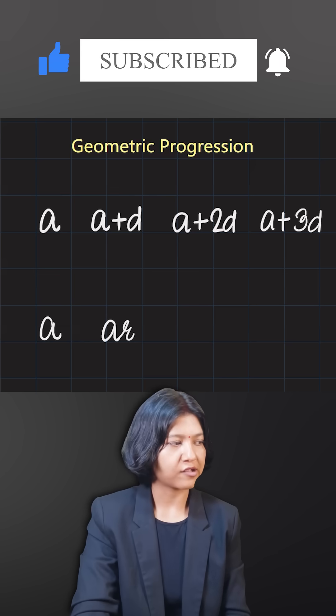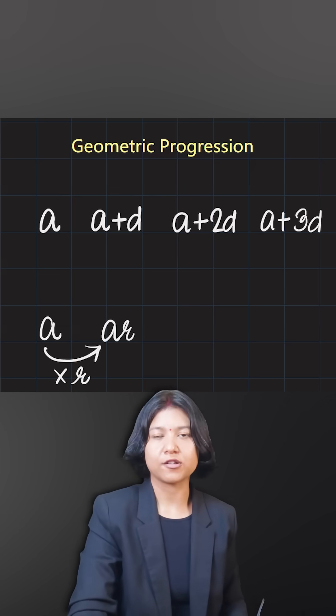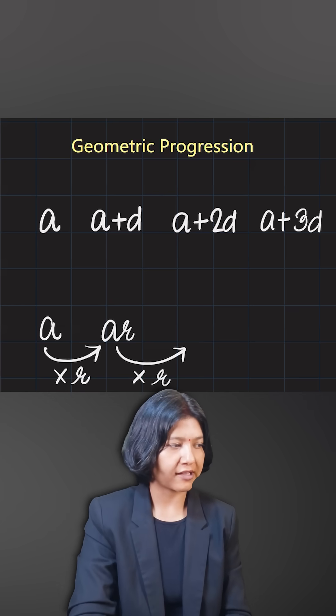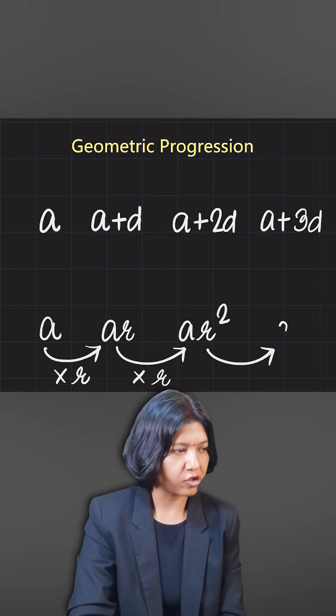The first term is a, multiplied by r, which is called the common ratio. This r further multiplies with the second term to give the third term: ar, ar², ar³, and so on.